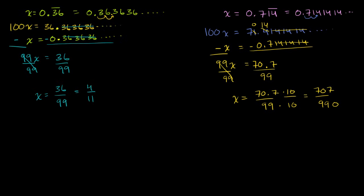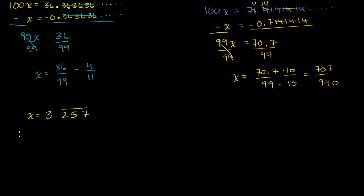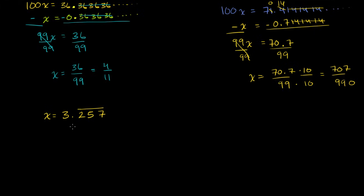Let's do one more example. Let's say we have 3.257 repeating, and we want to convert this into a fraction. We set this equal to x. This is going to be 3.257, 257, 257 — the 257 repeating on and on. Since we have three digits repeating, we want to think about 1000x, which is 10 to the third power times x. That will shift it just right so the repeating parts can cancel out.